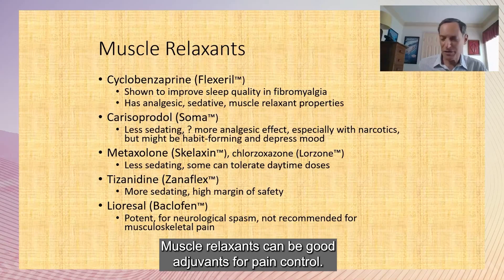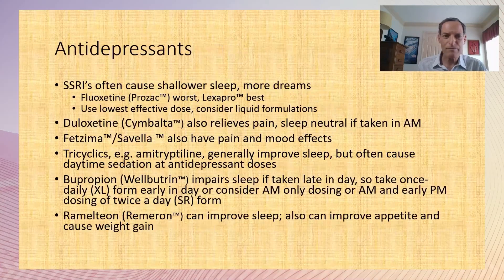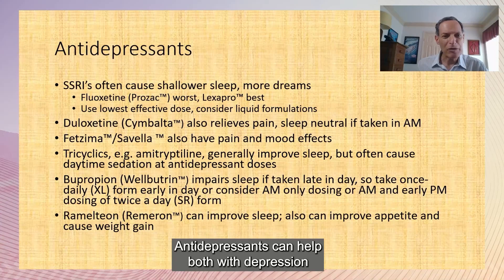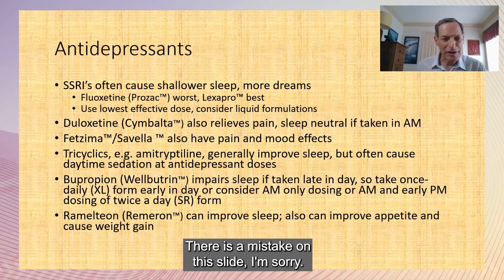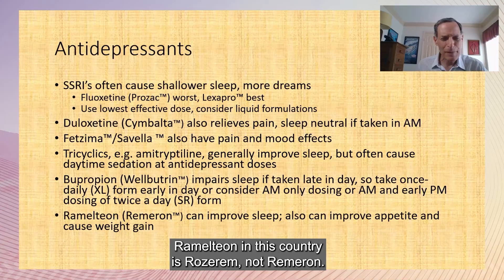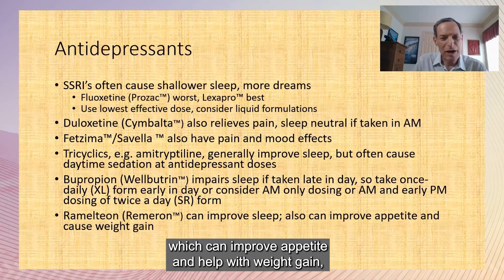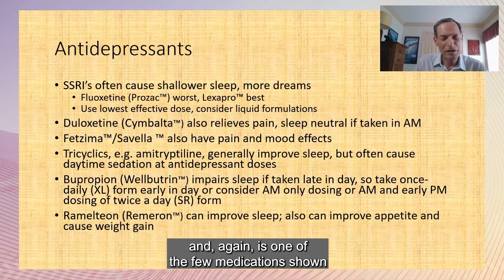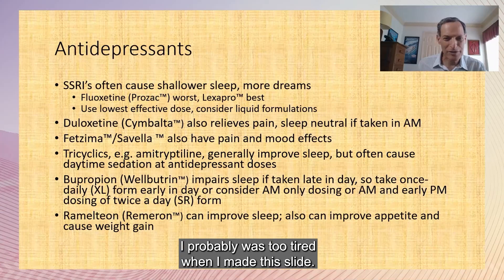Muscle relaxants can be good adjuvants for pain control, and some like cyclobenzaprine have been shown to improve sleep quality. Antidepressants can help with depression, which affects sleep. Ramelteon is a melatonin analog which can improve sleep. Mirtazapine can improve appetite and help with weight gain, and is one of the few medications shown to increase deep sleep.